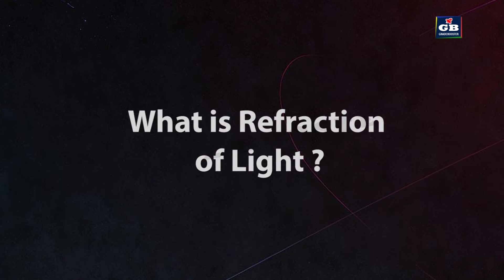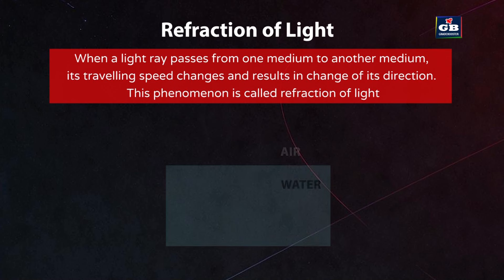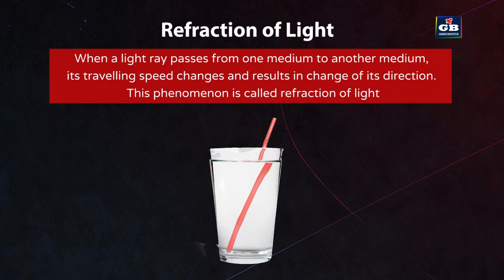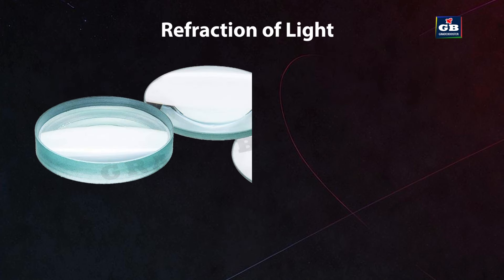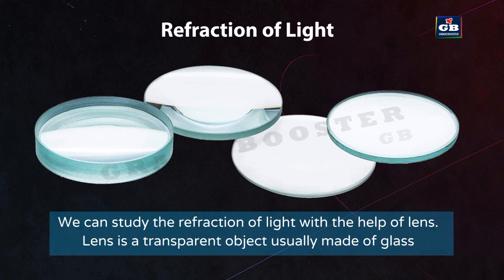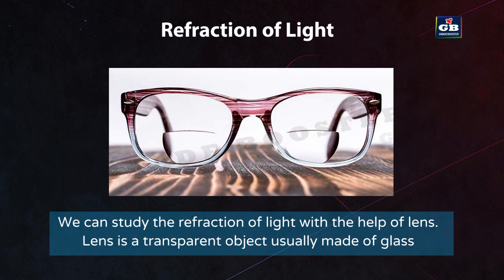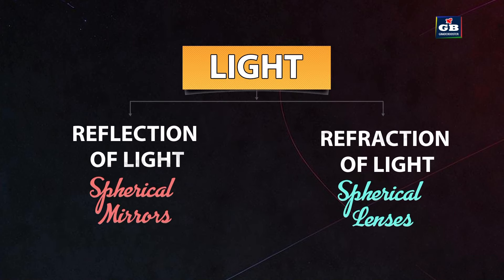Refraction of light: when a light ray passes from one medium to another, its traveling speed changes, resulting in a change of direction — this phenomenon is called refraction. A straw in a glass appears bent due to refraction of light. We can study refraction with the help of lenses, which are transparent objects usually made of glass. Eyeglasses are common examples of lenses used in daily life.